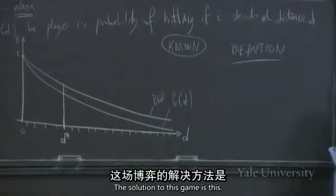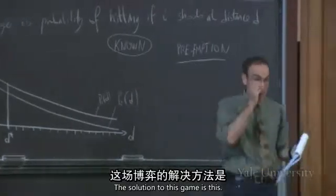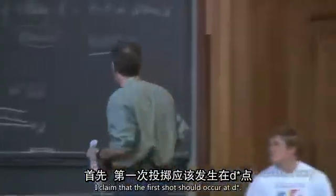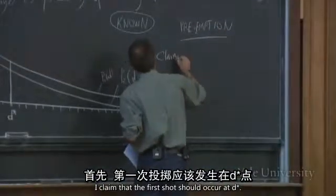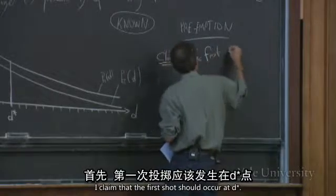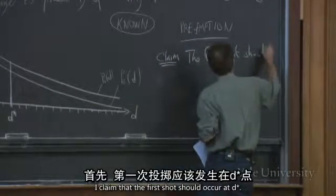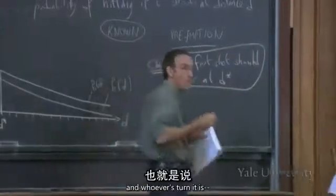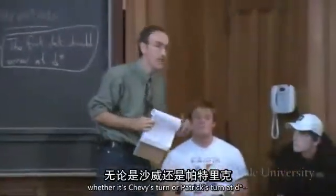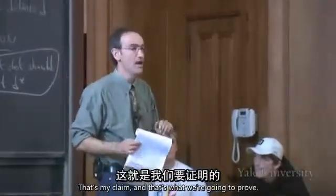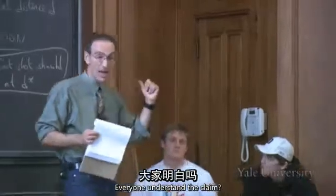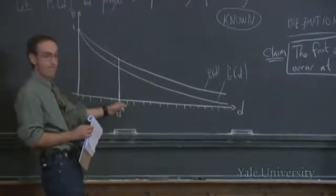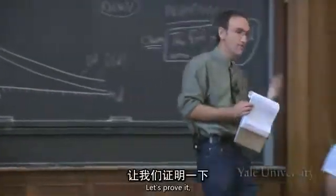So now I'm going to tell you the solution. The solution to this game is: the first shot should occur at D star. No one should shoot until you get to D star. And whoever's turn it is — whether it's Shebby's turn or Patrick's turn at D star — that person should shoot. That's the claim and that's what we're going to prove. It says nobody shoots, nobody shoots, nobody shoots... shoot.